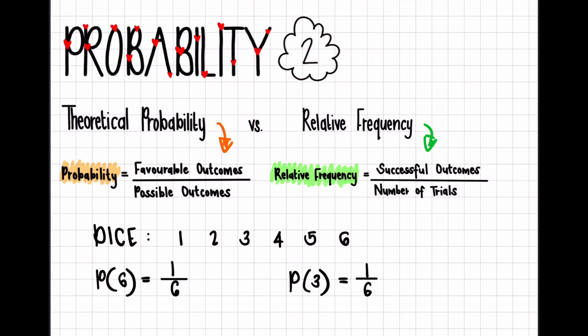So that's the probability. The probability of it landing on a six would be one out of six. The probability of it landing on a two would be one out of six. The probability of it landing on a five would be one out of six, etc.